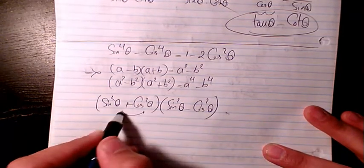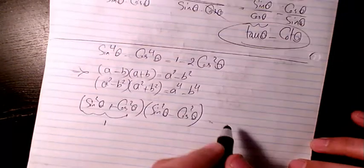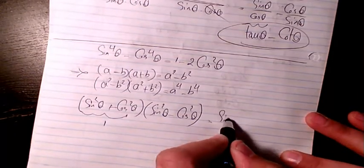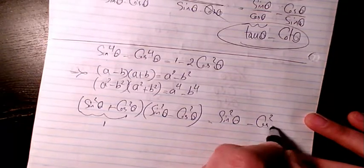And this is always 1, so the answer will be sine squared theta minus cosine squared theta.